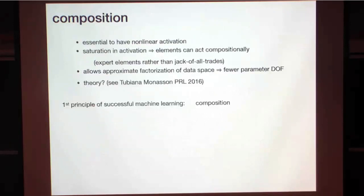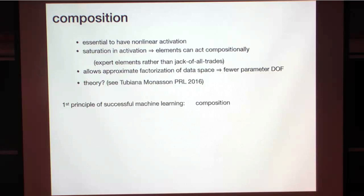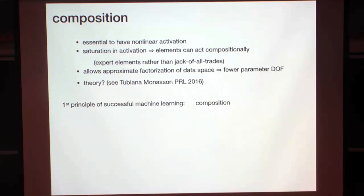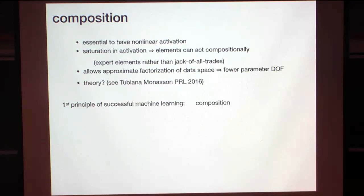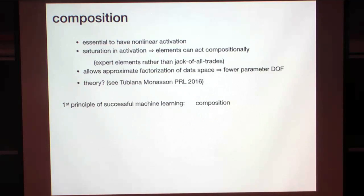Putting that together: it's essential to have nonlinear activation, because once you have saturation in the activation function, your elements can act compositionally. You have expert elements rather than jack-of-all-trades that must know about every possible input. Intuitively, you can save a lot of parameters — you're approximately factorizing the data space, so you have fewer parameter degrees of freedom to learn. There's a nice theory by my colleague Remy Monasson that shows this explicitly. So the first principle of successful machine learning is that you really want composition.